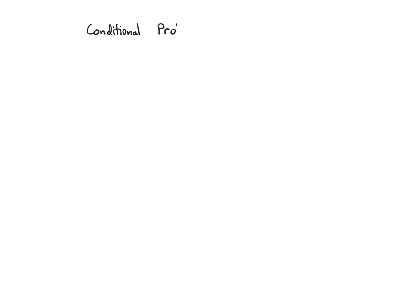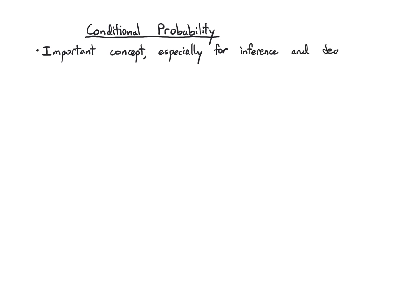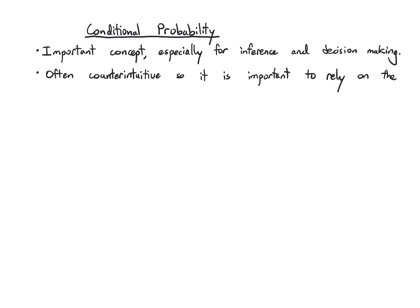We're ready to introduce conditional probability. This is a super important concept, and it plays a really important role in inference, decision-making, and all sorts of applications of probability. The problem is it's often very counterintuitive, so it's really important for us to rely on the formal mathematical definitions, at least at first.